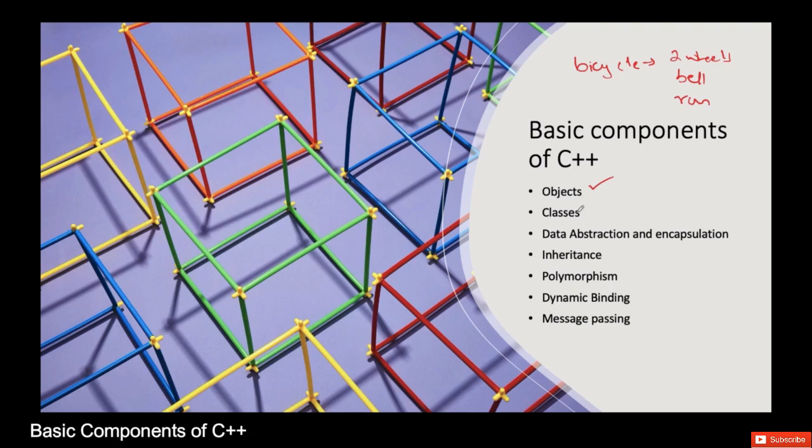In case of classes, it is a more generalized concept of objects. Like bicycle is an object, likewise another vehicle is car - that is also an object. So all these objects came under another category of vehicle. It's all vehicles, and these vehicles can be termed as the class.